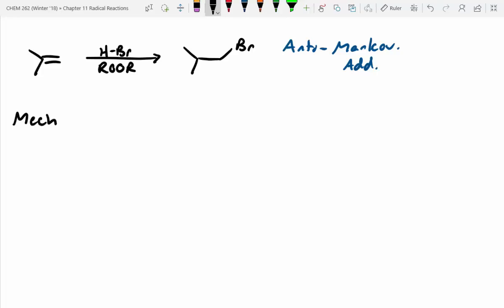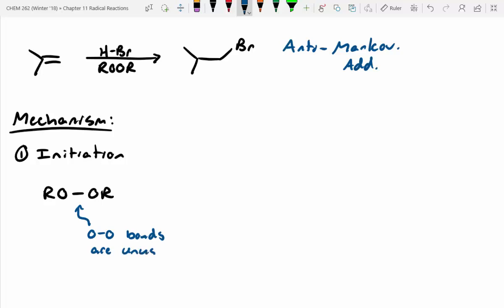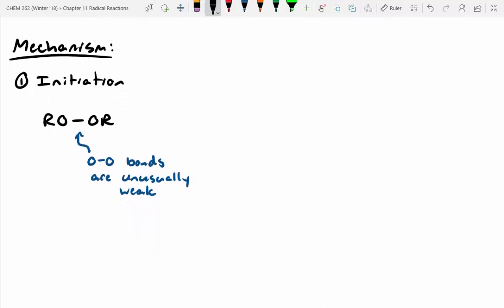The mechanism is really similar. So step one we know is initiation. And initiation we know we need to generate a radical. And typically, during our initiation step, we're breaking the weakest bond present. In this case, the weakest bond present is actually in our peroxide. So oxygen-oxygen bonds are unusually weak, meaning they're easy to break. So our initiation step starts with our peroxide. We can treat this with heat. We don't even need UV light here. And then we'll do a homolytic cleavage of our peroxide, and we'll generate two oxygen radicals. So that's our initiation step. A little bit different, but same idea.